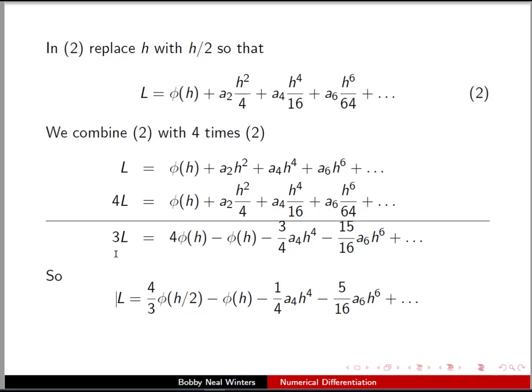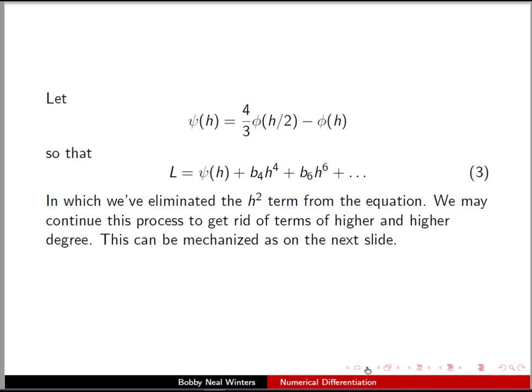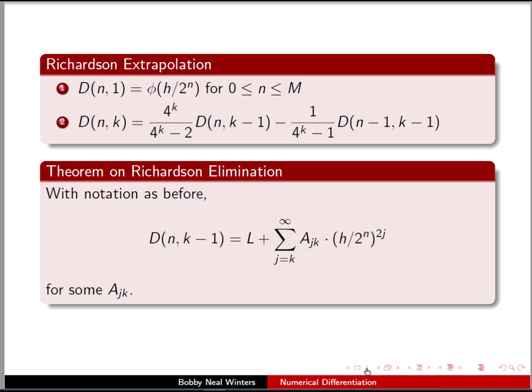So we solve, I guess this is a 3 somehow. We solve for L here by dividing by 3, and we have this expression again. Okay, where are we headed? Well, things are getting too complicated again, so let's let ψ(h) be equal to this expression and roll it in. And we've eliminated the h² term from the equation, so we only have h to the fourth. And remember the h is going to be small, so we can go through this sort of iterative process to get rid of terms of higher and higher degree, and the next slide, we set up the mechanism for it.